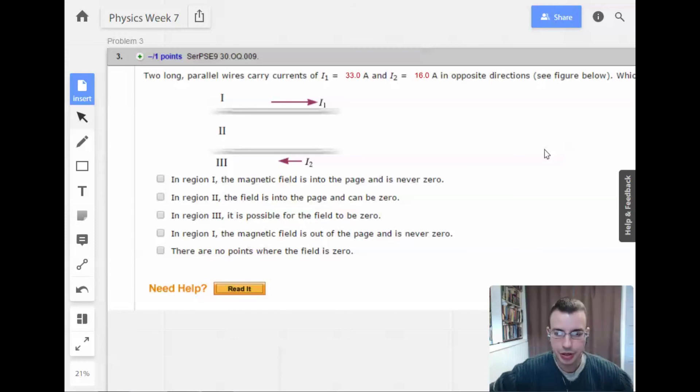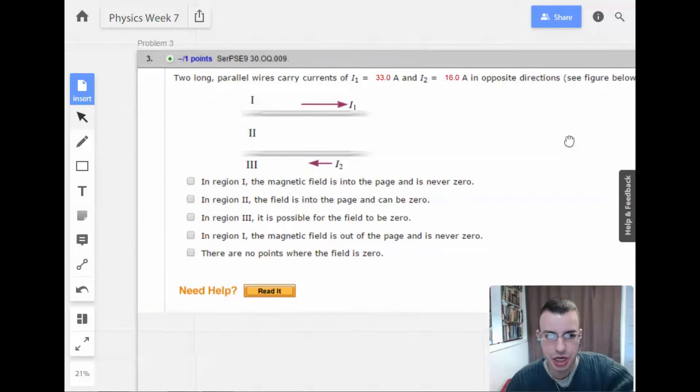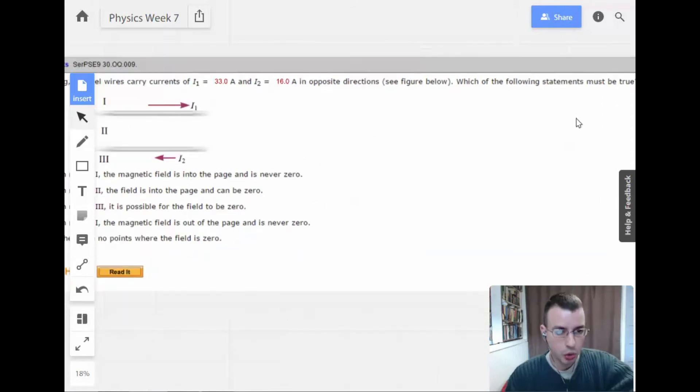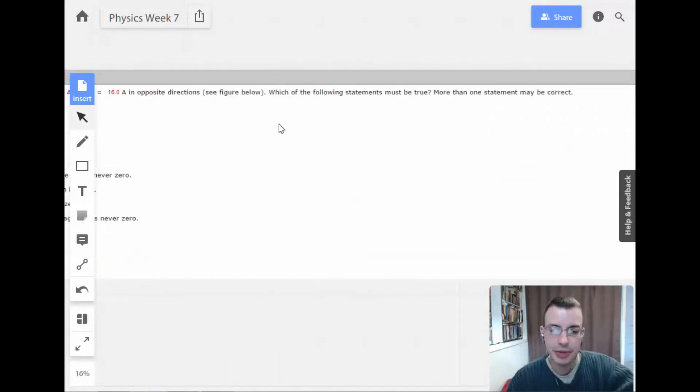Week three, problem three. Two long parallel wires carrying currents of 33 amps and 16 amps in opposite directions. See figure below. Which of the following statements must be true? More than one statement may be correct.